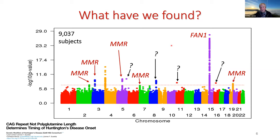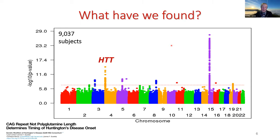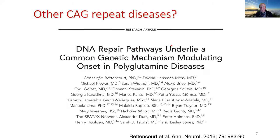We also found a number of other genes, and we don't yet know what they do — they may act on the same mechanism as FAN1 and the mismatch repair genes, or they could have other effects. We also found a hit in Huntington itself, and it's not due to the CAG repeat per se, because we excluded that at the beginning. Interestingly, the same genetic signal appears to underlie other repeat disorders, including spinocerebellar ataxias caused by expanded CAG repeats. This suggests that these genetic modifiers probably act at the level of the DNA mutation rather than further downstream.